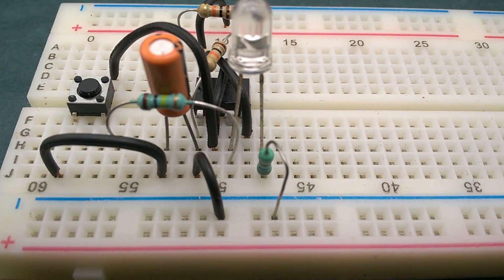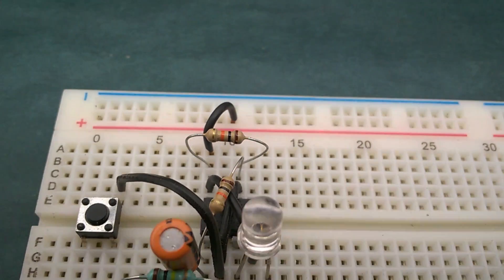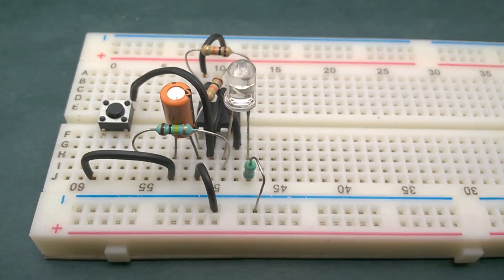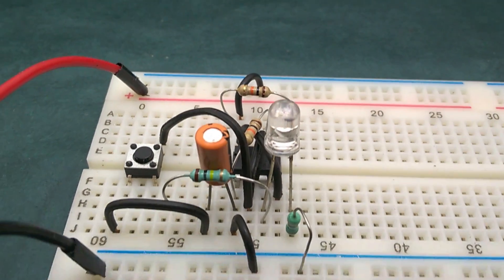Now connect pin 1 of the IC to the negative rail and pin 8 of the IC to the positive rail. Finally, connect the positive and negative terminals of the battery to the respective rails.